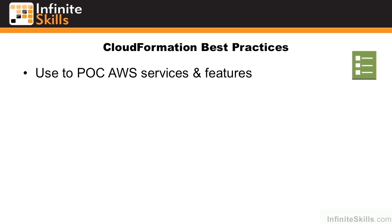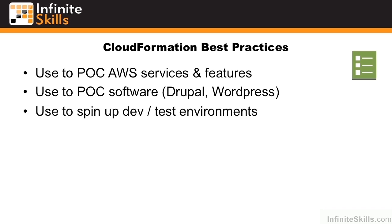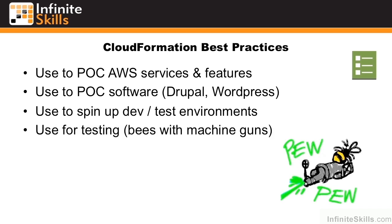CloudFormation is a great way to POC, or proof-of-concept, Amazon services and features. If you want to get familiar with how a service works, it's a really good practice to spin up a template and see how Amazon configured it. You can also use this to proof-of-concept individual software such as Drupal, WordPress, Redmine, and so forth. It's very useful to spin up dev and test environments and then tear them back down. CloudFormation allows one-button deploy and one-button removal — you simply push delete template and it will remove all resources that were created. It's also excellent for testing, with a particularly good template being bees with machine guns, which spins up a bunch of T1 micros used to load test your application.